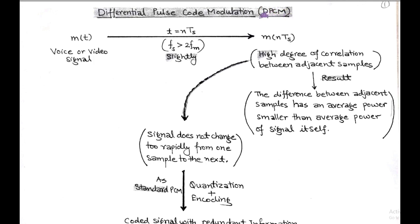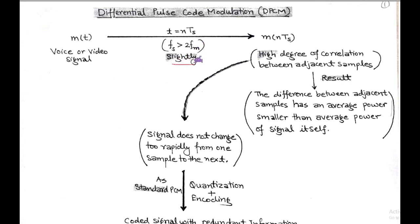In differential PCM, modulating signal M(t) such as voice or video signals are sampled at t equals NTS with Nyquist rates slightly higher than twice of fm, and we get the sampled version M(NTS). After sampling with Nyquist rate fs slightly greater than twice of fm, there is an introduction of a high degree of correlation between adjacent samples.